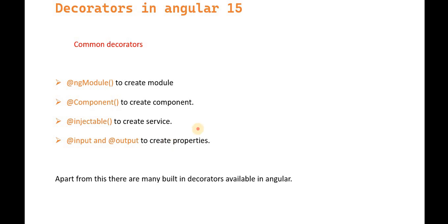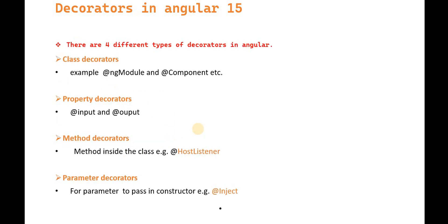There are basically four types of decorators in Angular. First is the class decorator — that includes @NgModule and @Component. Second is the property decorator — that includes @Input and @Output. Third is the method decorator — we have @HostListener. Fourth is the parameter decorator — to pass data into the constructor, we use @Inject.